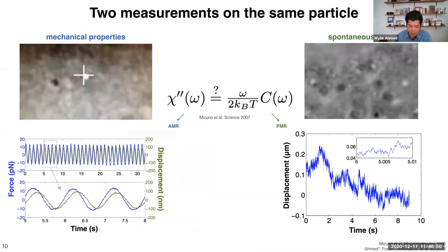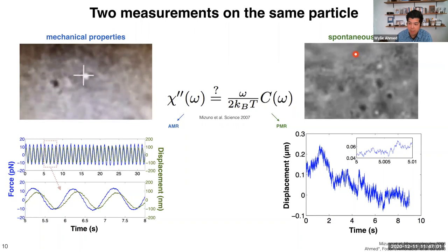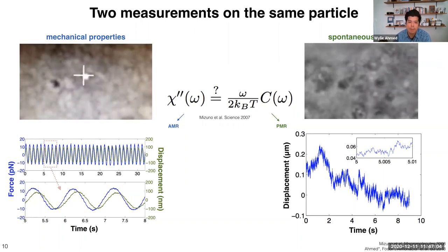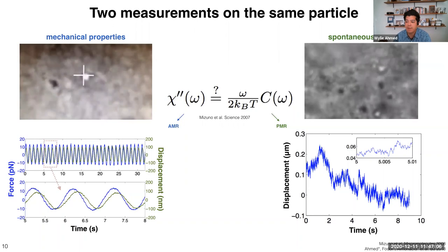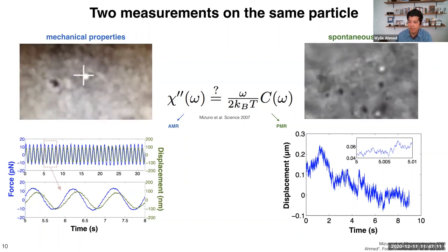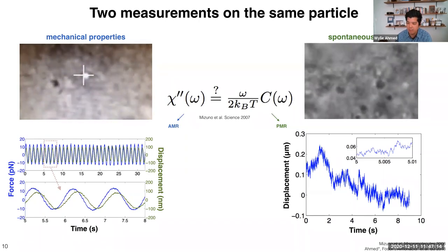To drive that point home: we do two measurements on the exact same particle. We have this particle in the trap applying a displacement to get the response function, and then separately we measure the spontaneous fluctuations. We calculate the left and right side of the FDT equation independently for the same particle in the same situation. They can't be done at the same time, but we do them right after one another and switch their order to make sure that doesn't make a difference.